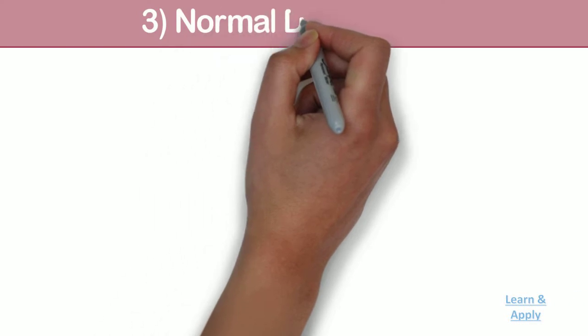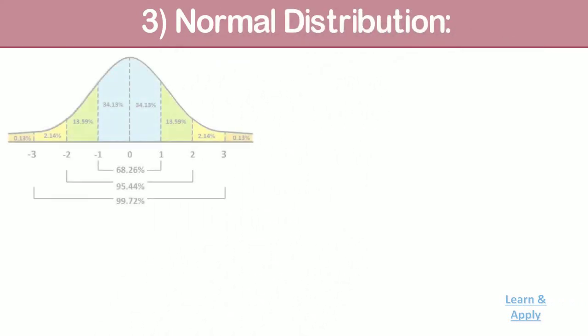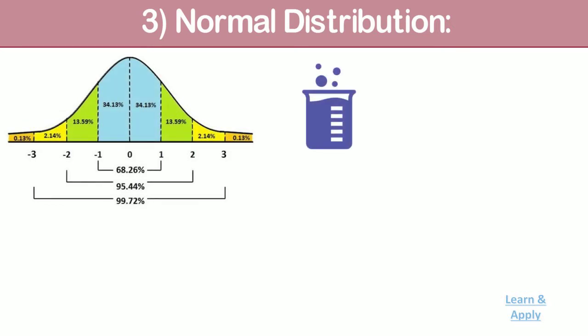Normal distribution. The normal distribution is the most common statistical distribution because approximate normality arises naturally in many physical, biological, and social measurement situations.